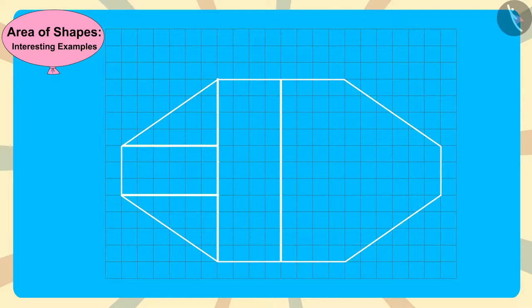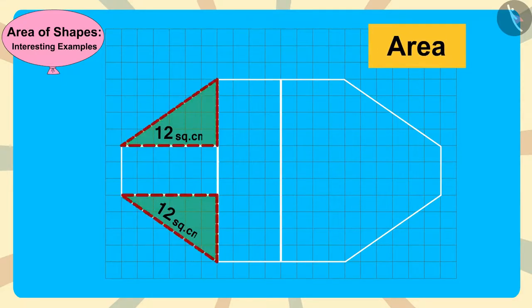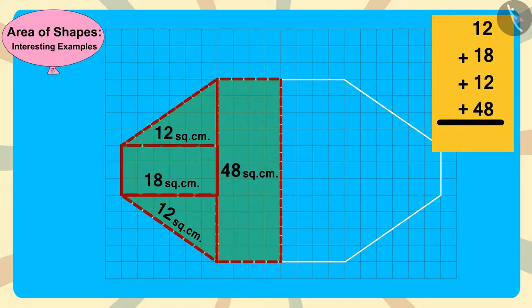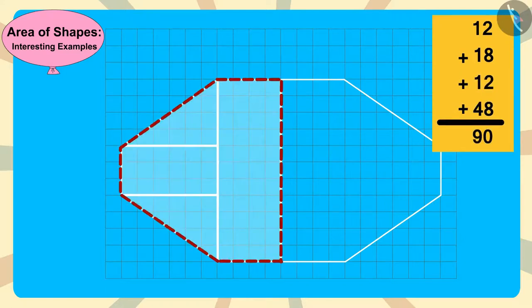Now, all we have to do is find the area of these triangles and rectangles. We can add the area of these shapes and find the area of this part of the diamond as 90 square centimeters.